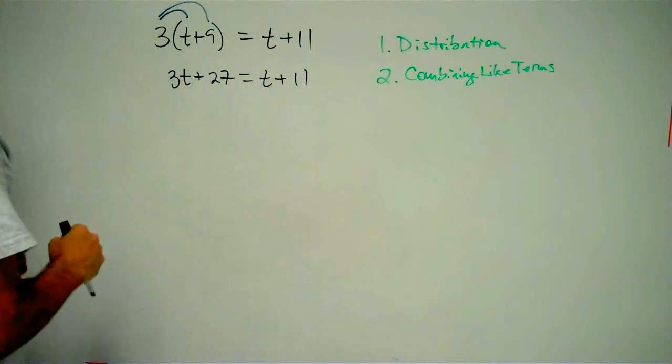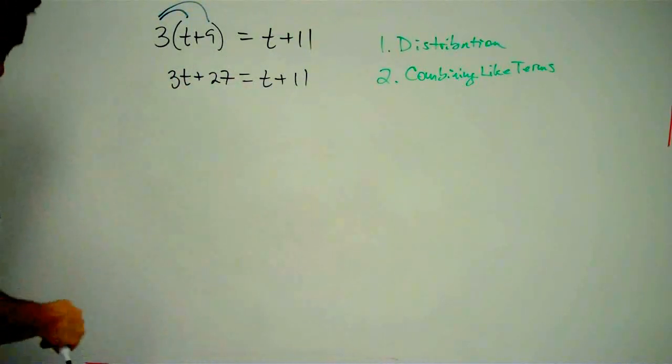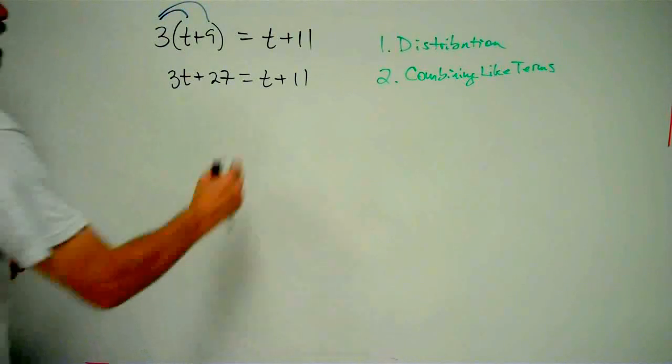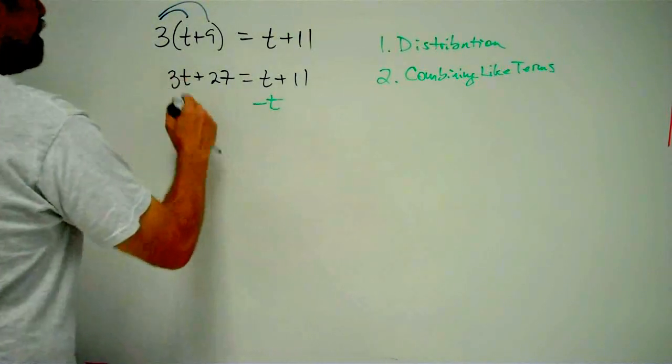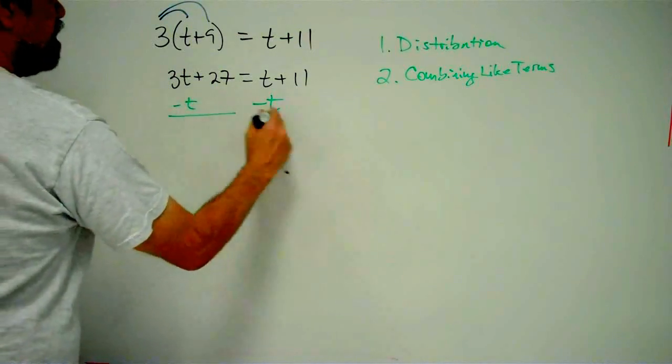I've got to get rid of some of these t's. How do I do that? By subtracting. I'm going to subtract a t right here, and I'm going to subtract a t right here.